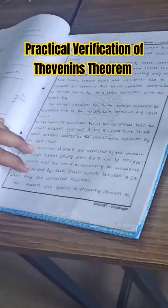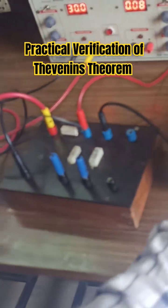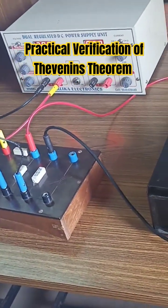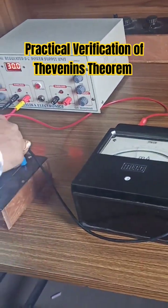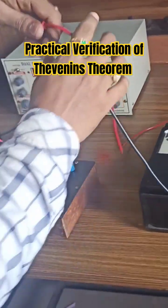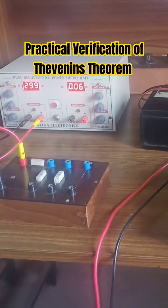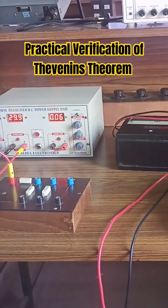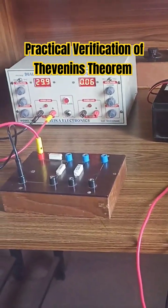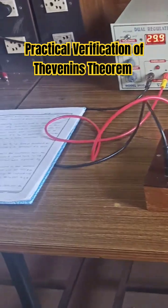Now, let us try to see here, we are going to find the parameters of Thevenin's theorem. First, dismantle the given equipment. Now let us try to do it by Thevenin's indirect method.